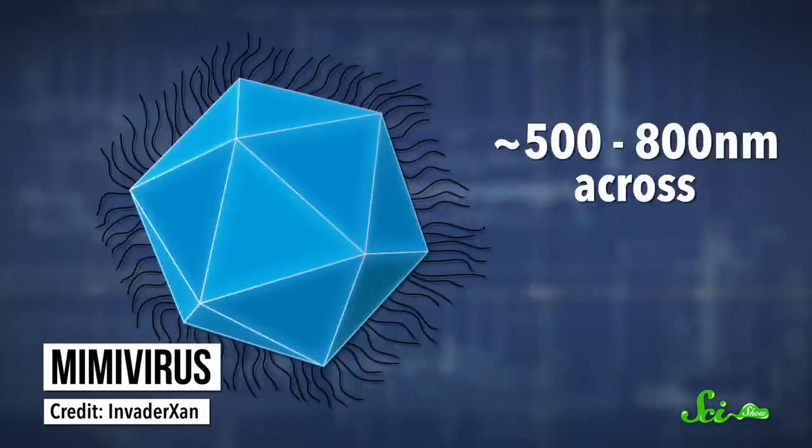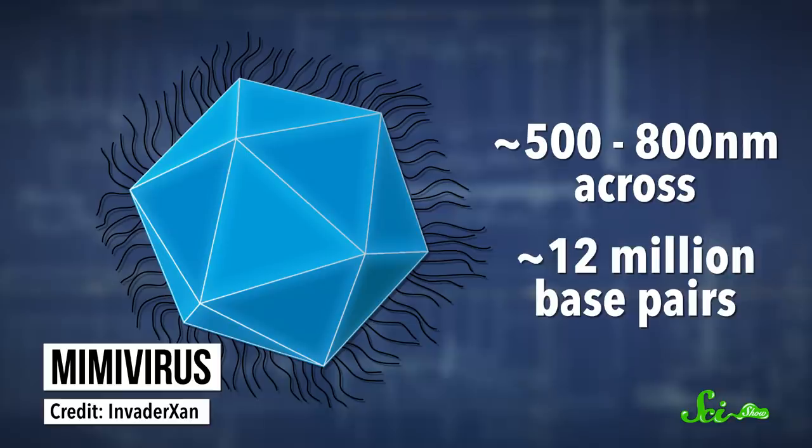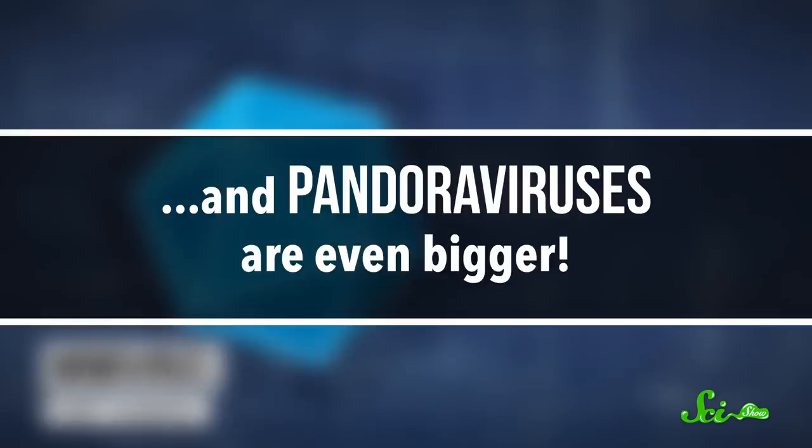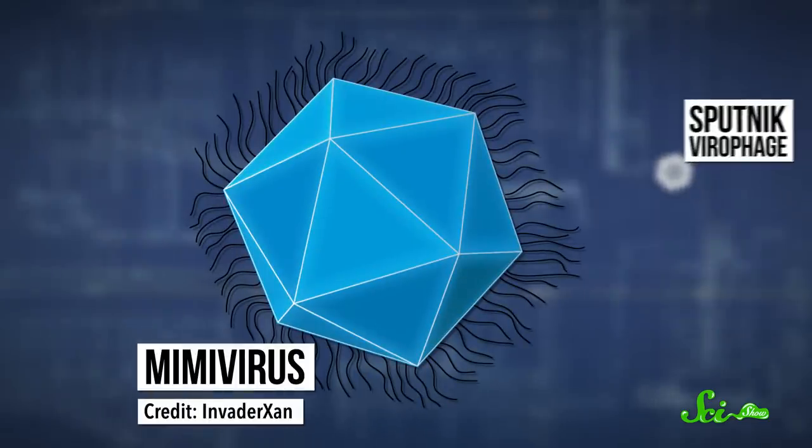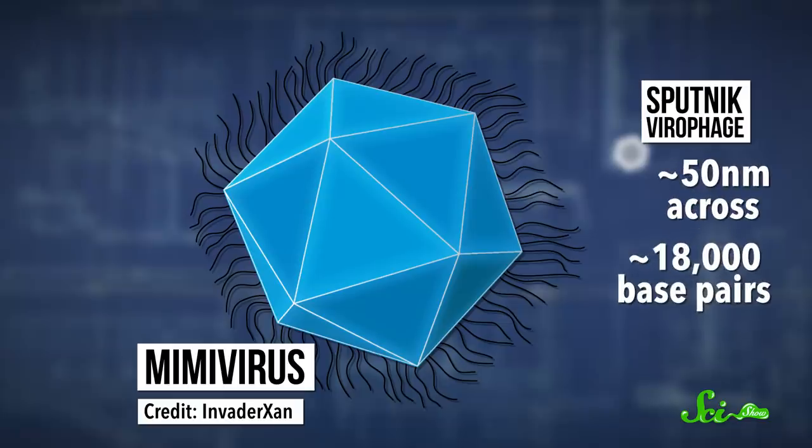Like, mimiviruses are about 500 to 800 nanometers across and have genomes of around 12 million base pairs. And pandoraviruses are even bigger. Now, mimiviruses are preyed upon by the Sputnik virophage, which is only 50 nanometers across and has a genome of about 18,000 base pairs.